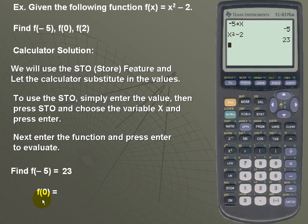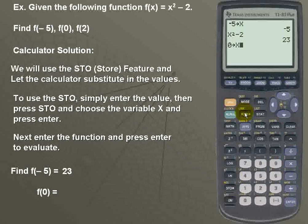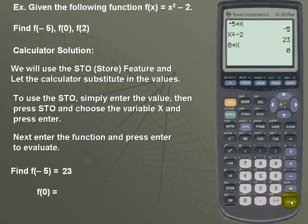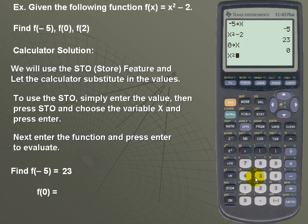Next, we'll find f of 0, so I'll take the value of 0, store that for x, and hit ENTER to lock it in. I'll then go back and enter my original function, which is x squared minus 2, for a result of negative 2.